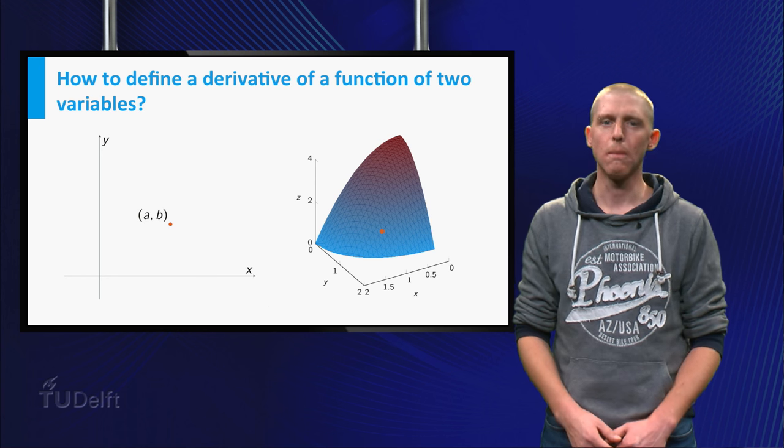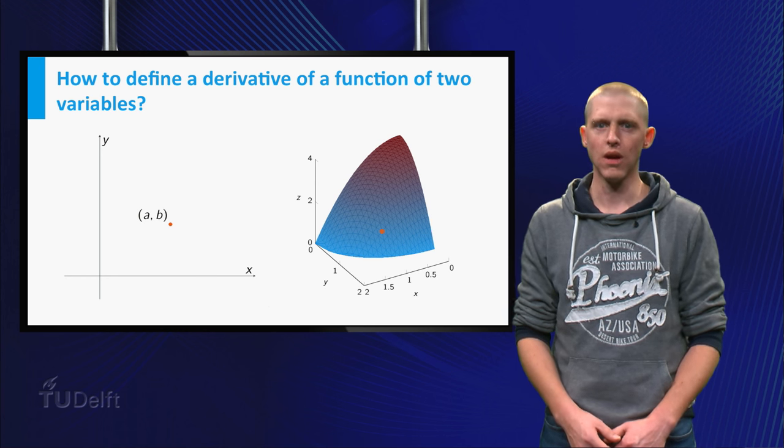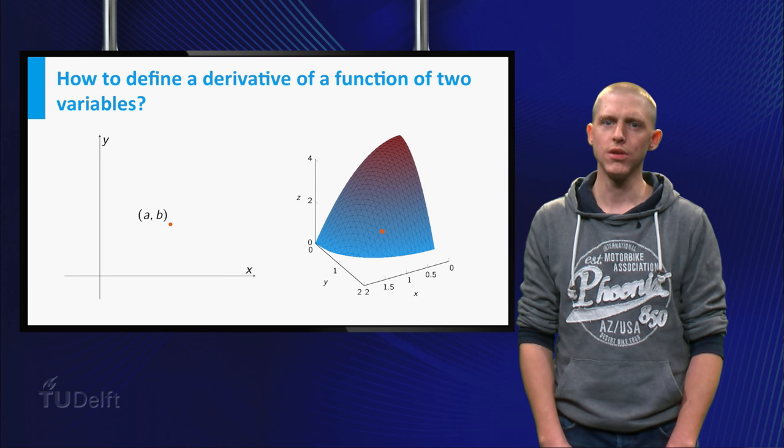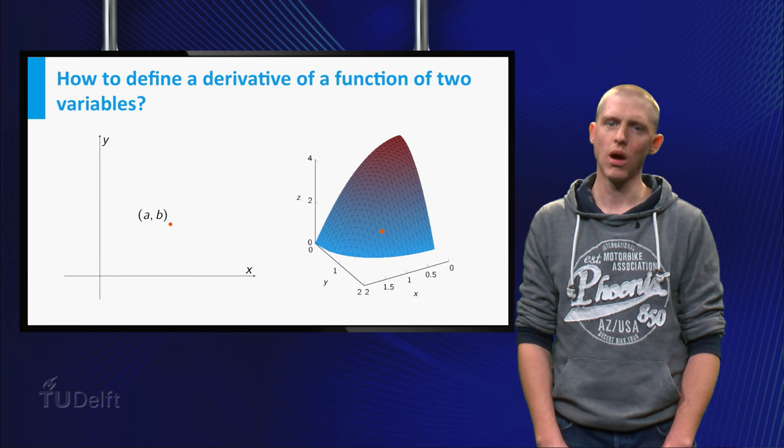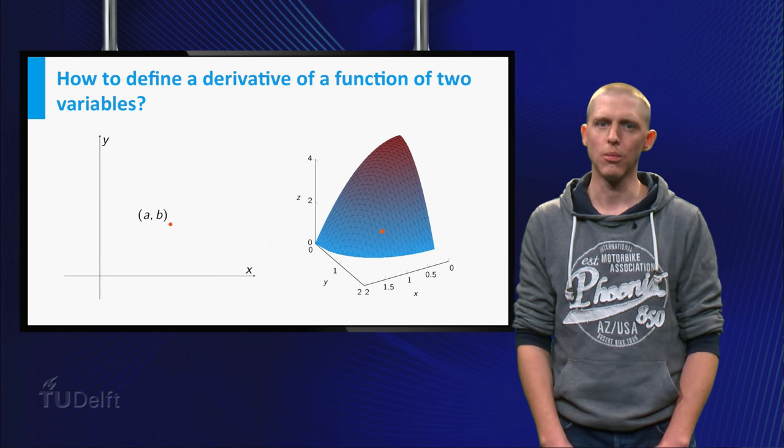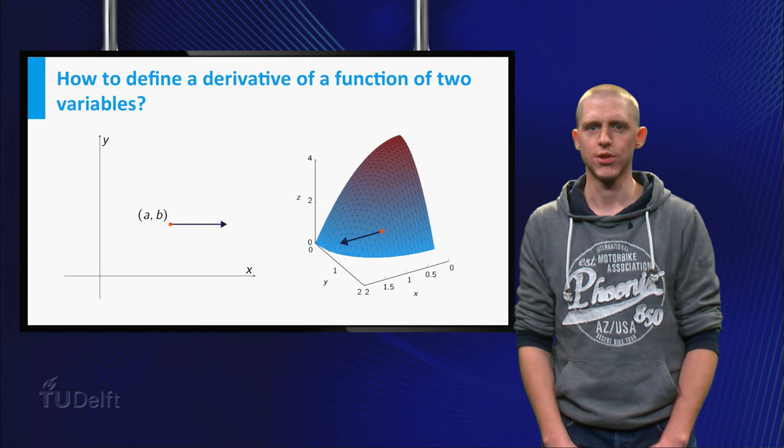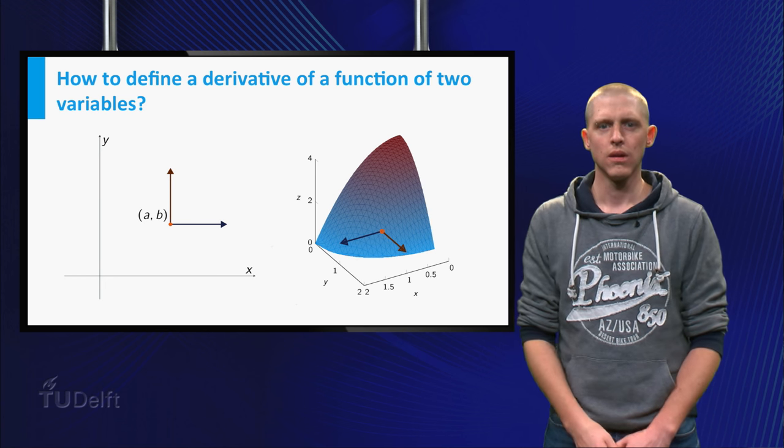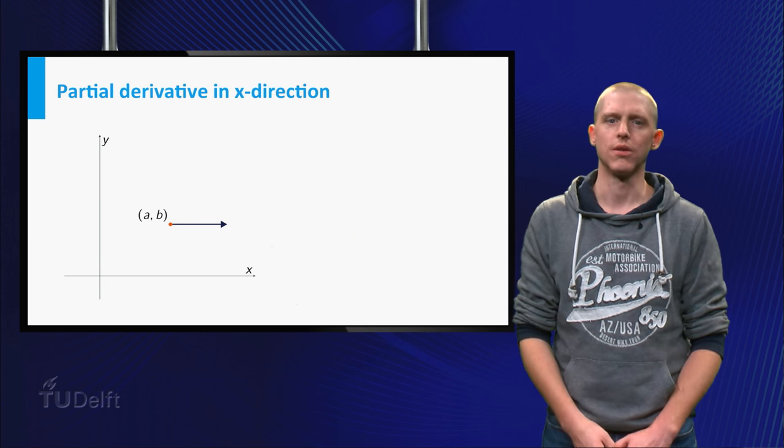The two so-called partial derivatives of f at the point (a,b) are defined as the rate of change of f when (x,y) moves away from (a,b) in the x-direction and in the y-direction. Let's have a look at the first scenario.